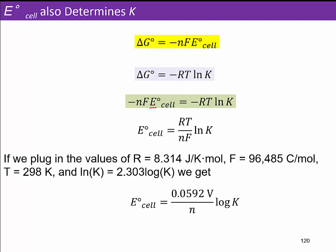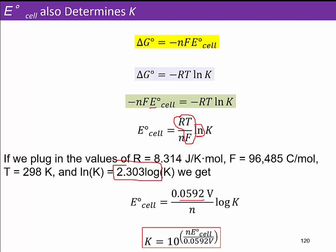If we assume R is a constant, Faraday's constant is also a constant, and our temperature is at standard temperature, we ball all those constants together into one new constant. Then rather than using a natural log, we convert to a base-10 log, and we get 0.2303 log of K. So our E_cell is going to be 0.0592 — and we're going to see this 0.0592 a lot — divided by N times the log of K. We can rearrange that and say K equals 10 to the power of N times E_cell divided by 0.0592 volts.